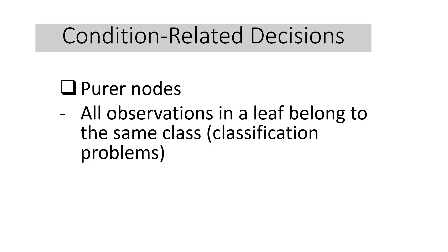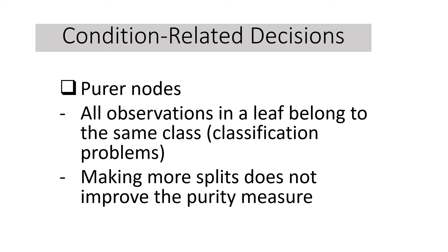The next one is that all observations in the leaf belong to the same class. And again, it refers to classification problems. And another thing is that when we want our decision tree to stop from splitting is when making more splits does not improve the purity of the measure. So when the measure is deteriorating, then we can possibly say that we are going now to stop the splitting of our nodes.